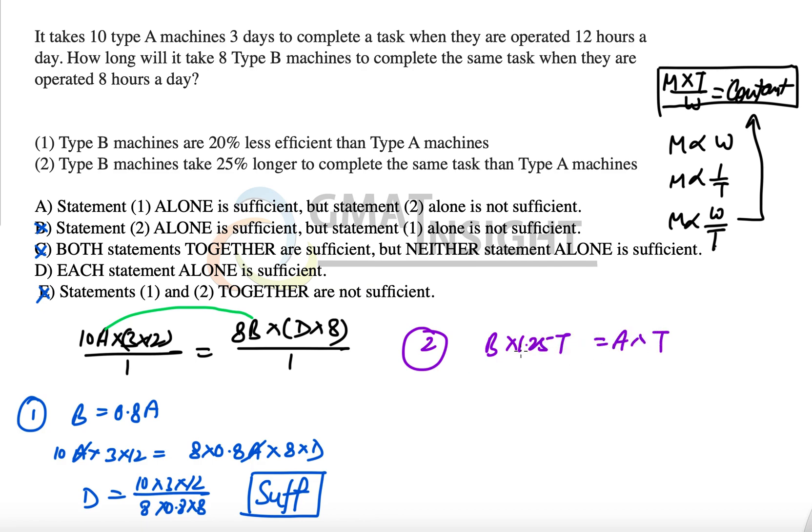So I'm once again using M into T upon W. So B into 1.25T upon 1 is equal to A into T upon 1. So that gives me B is equal to A over 1.25, which is once again 0.8 times of A. That means this statement 2 gives us exactly the same information that statement 1 gave, and hence this statement 2 is going to be sufficient.